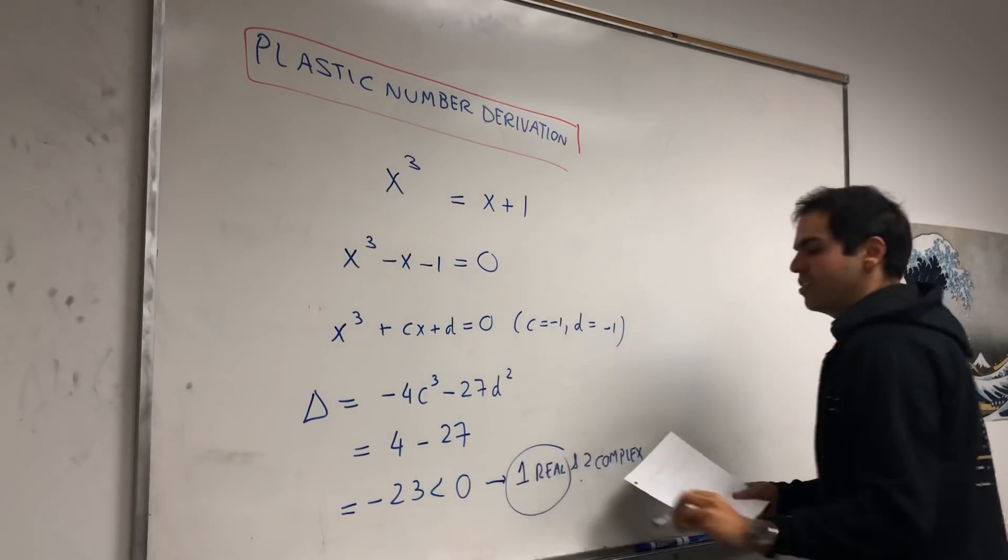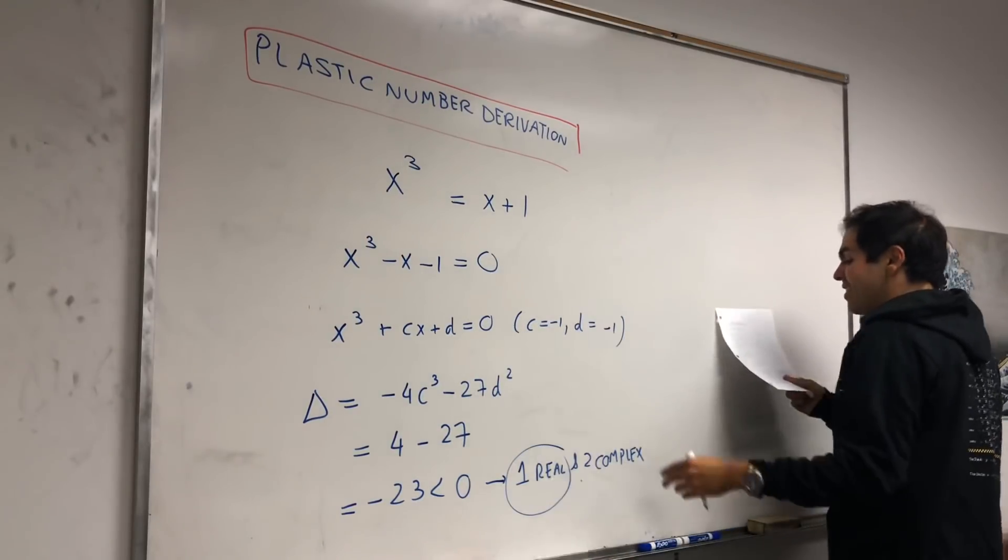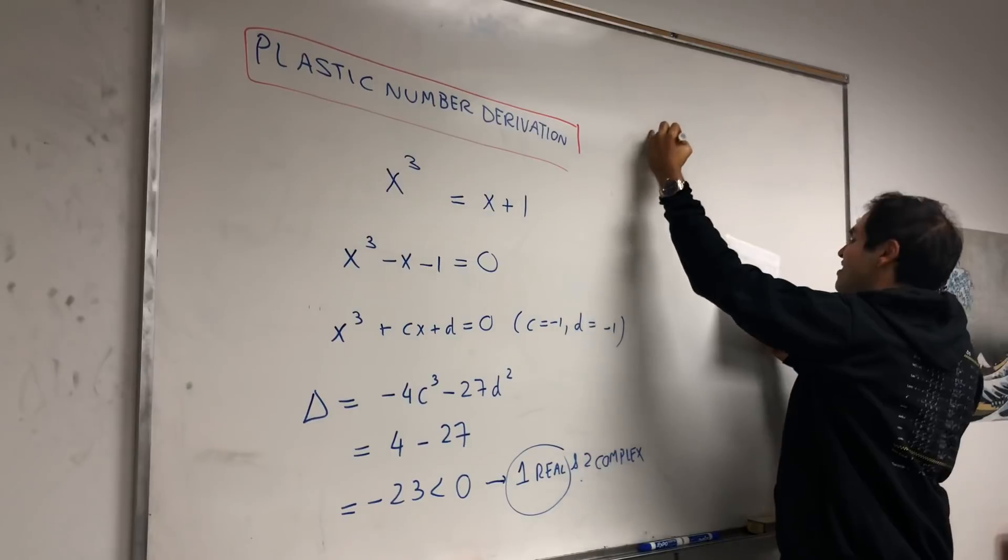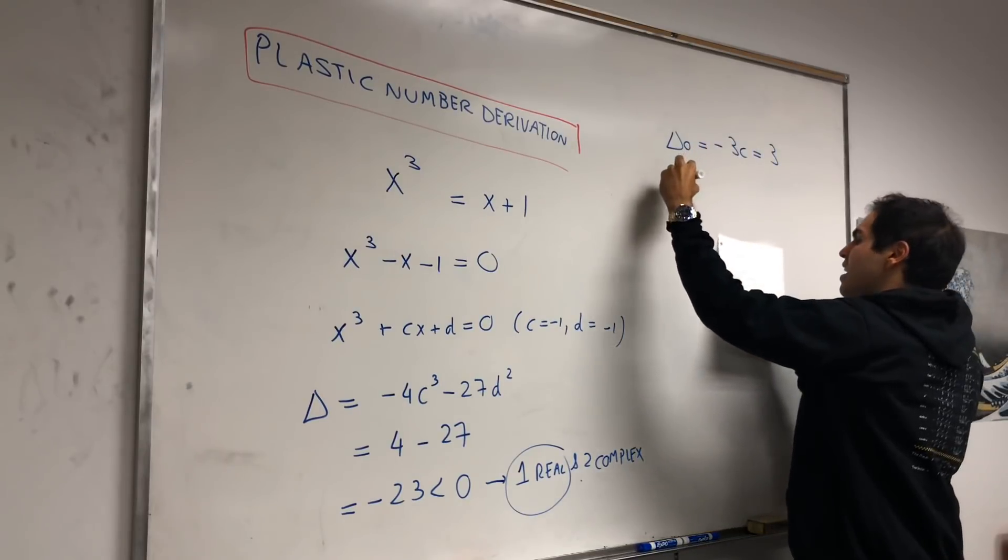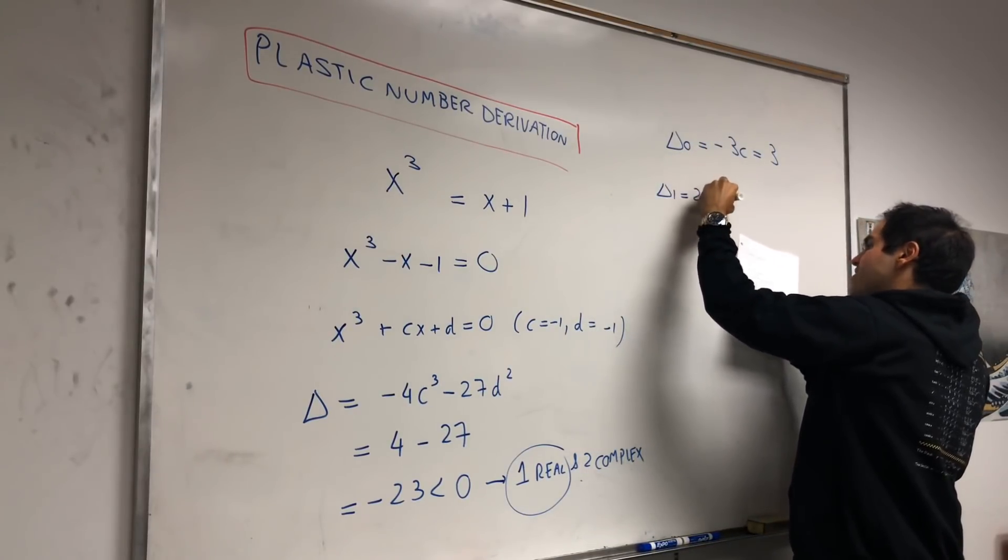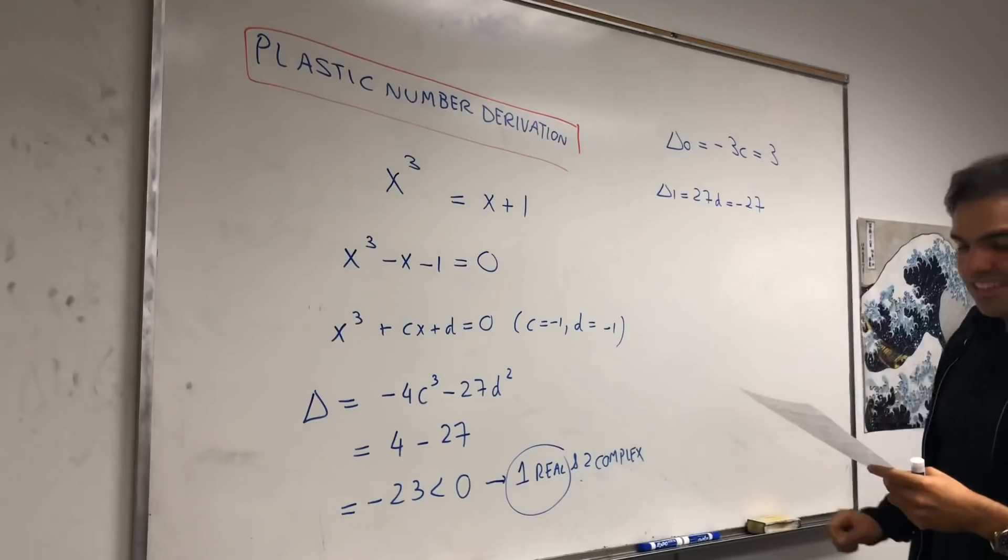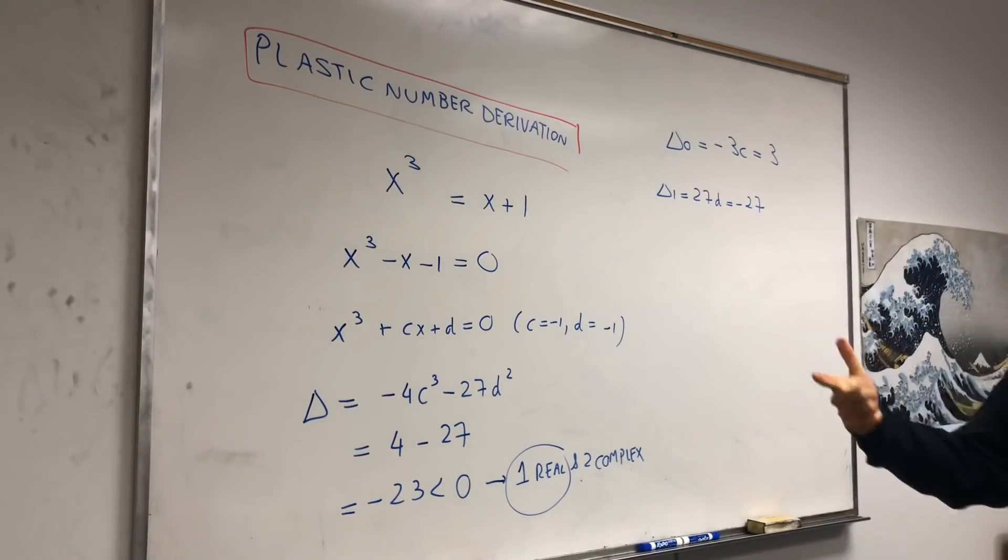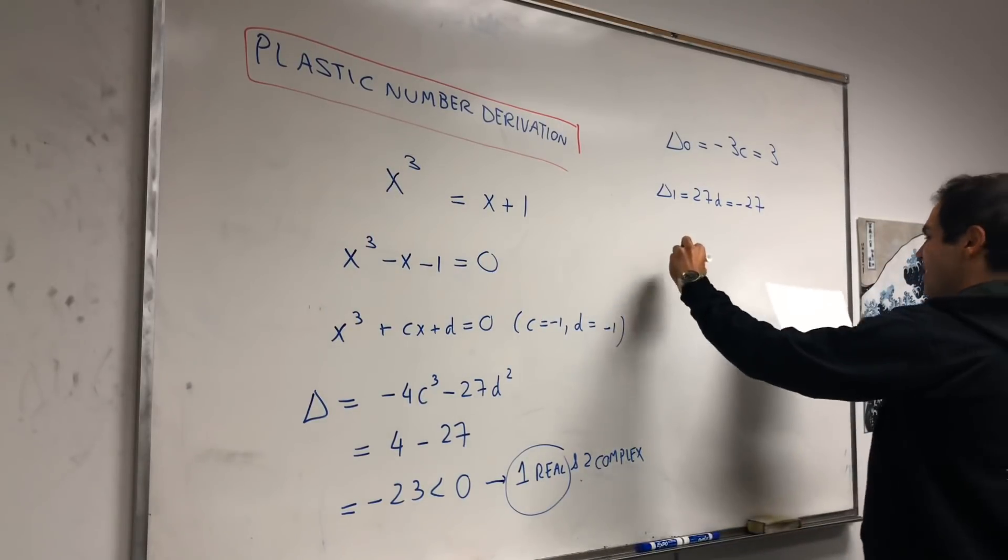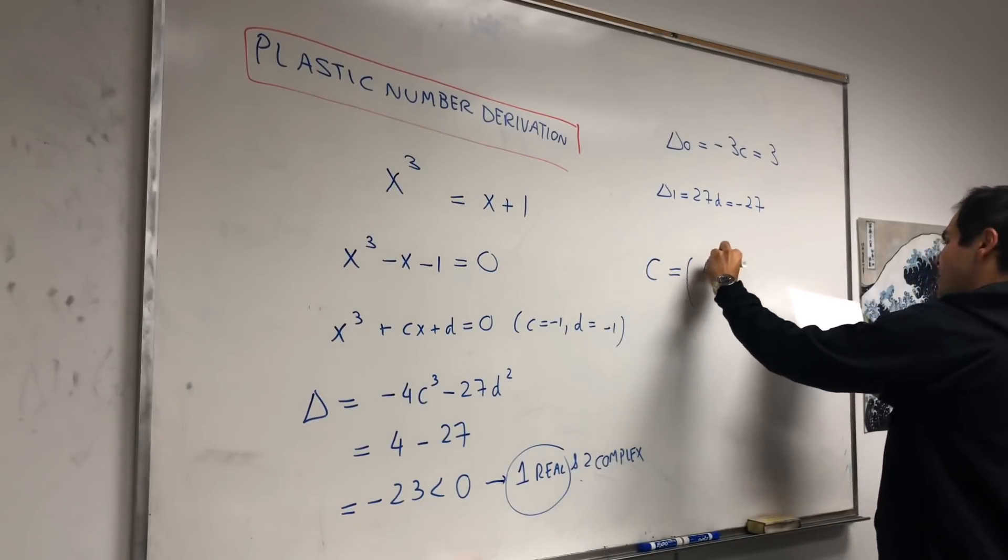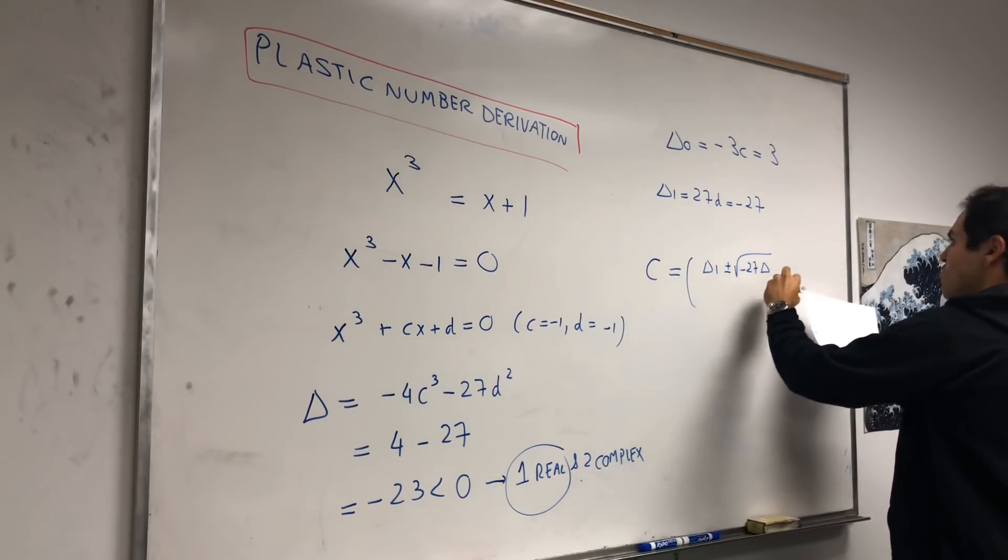And the goal is to find a real solution. The plastic number is the real solution to this equation. And to find it, we need to calculate some other discriminants. So, delta 0, which is minus 3c, which becomes 3, and delta 1, which is 27d, which is minus 27. And we'll need delta 0 and delta 1. And then there's some auxiliary number, some helper number that helps us find a solution. Namely, C is delta 1 plus or minus square root of minus 27 delta over 2. And worse, you take the cube root of that.